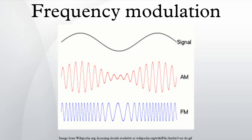Frequency modulation can be classified as narrowband if the change in the carrier frequency is about the same as the signal frequency, or as wideband if the change in the carrier frequency is much higher than the signal frequency.